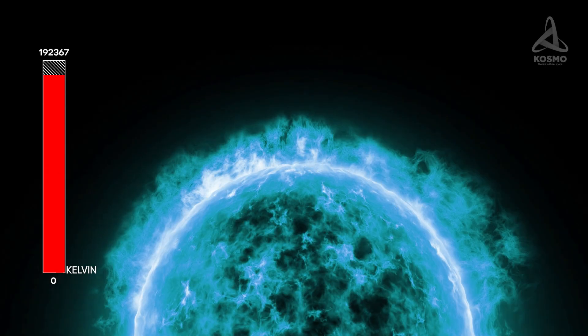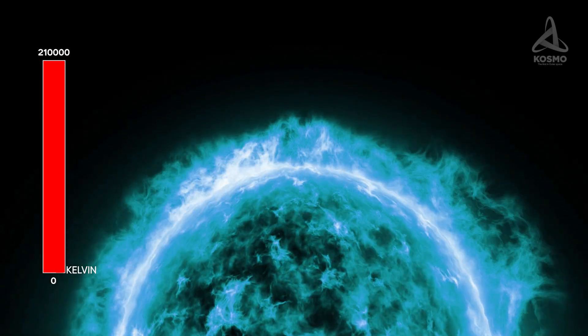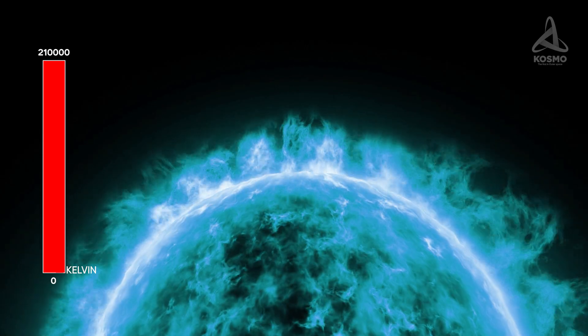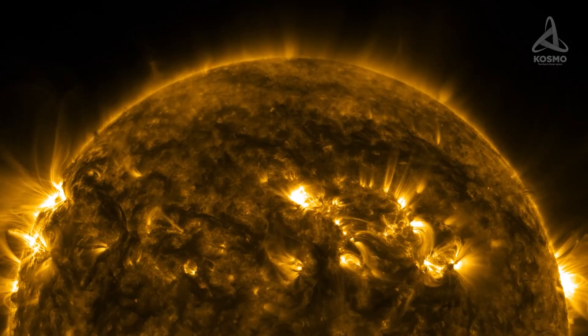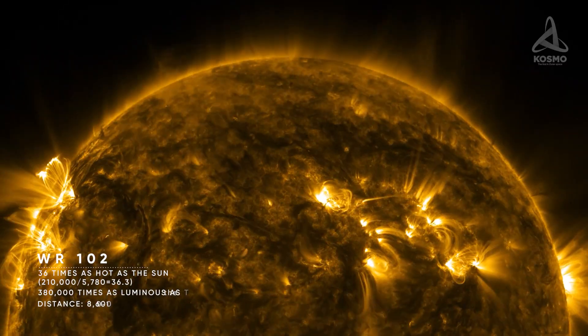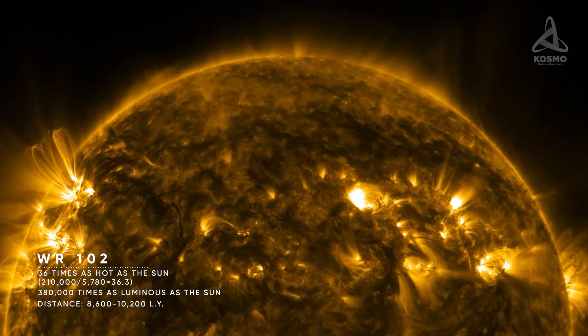Spectral analysis showed that the star's surface temperature reaches over 210,000 Kelvin. This makes WR102 approximately 36 times as hot as our Sun.